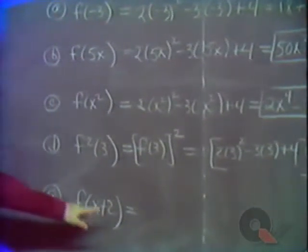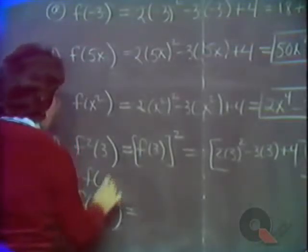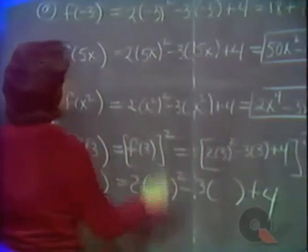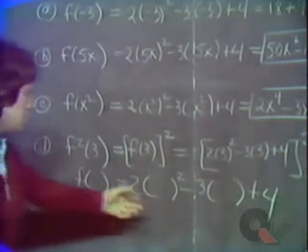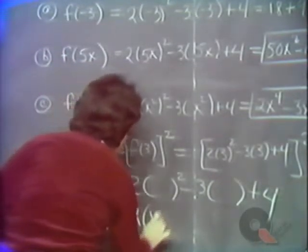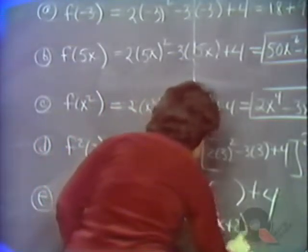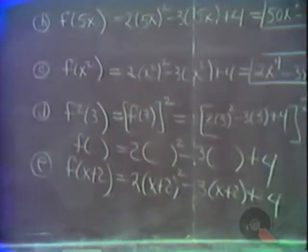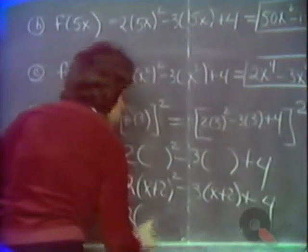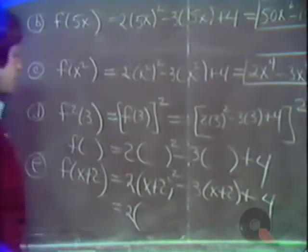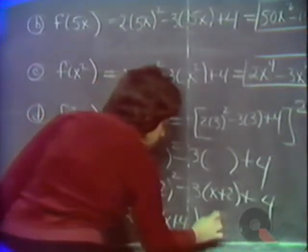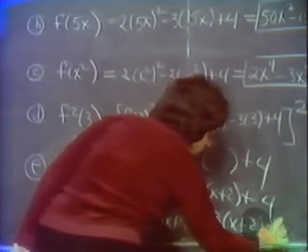Now we have f of x plus 2. Don't let that bother you. Just remember that f of anything is 2 times that something squared minus 3 times that something plus 4 — it doesn't matter whether you're plugging in a number, a variable, or whatever. So f of x plus 2 will be 2 times the quantity x plus 2 squared minus 3 times x plus 2 plus 4. Now x plus 2 squared is x plus 2 times x plus 2, which gives x squared plus 4x plus 4.